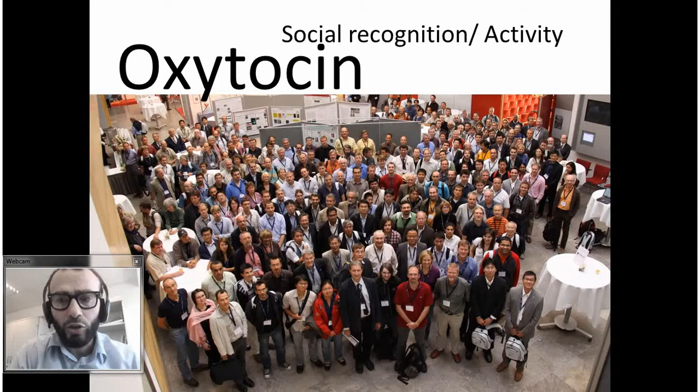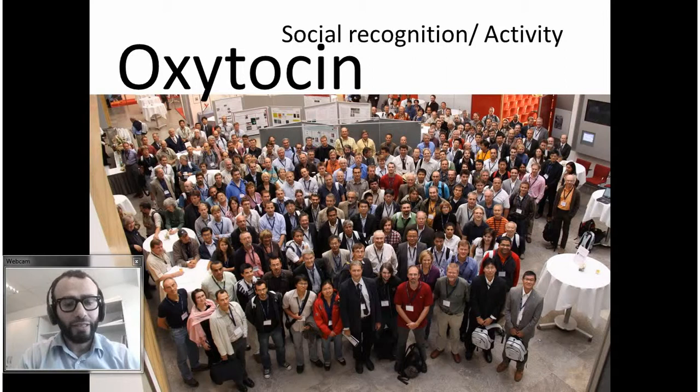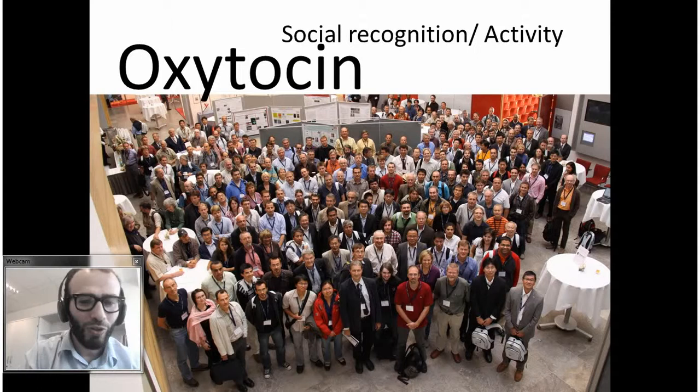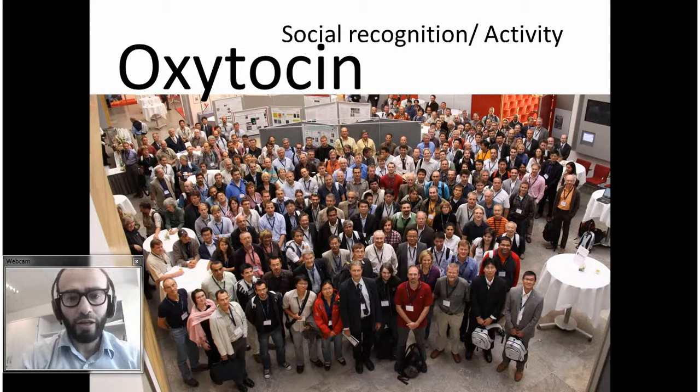Oxytocin is the social recognition and activities chemical. We are human beings and we can never collaborate until we feel some kind of social atmosphere. Social atmosphere can be implemented in two ways. The first is by touching — when you make a deal with your colleagues and shake hands and say 'yes, I would like to work with you.' This kind of human physical contact works very well to enhance oxytocin. Once oxytocin increases in your body, you feel very good, very happy, and you are able to be open to others, have empathy for others, and collaborate with others.